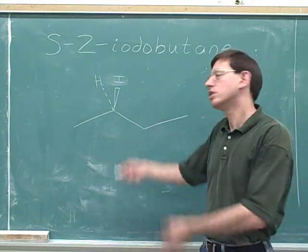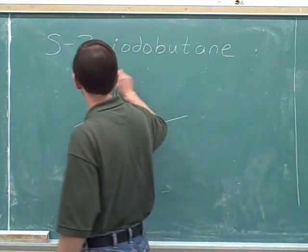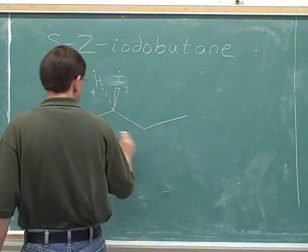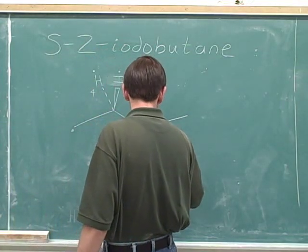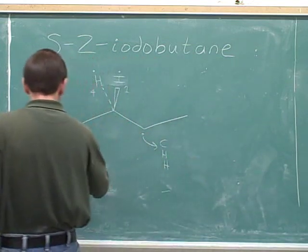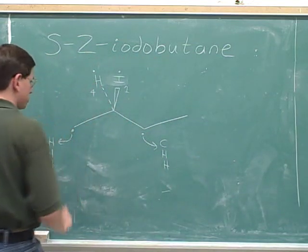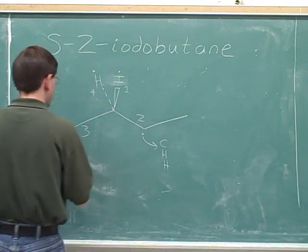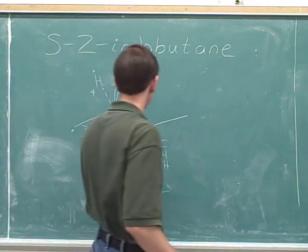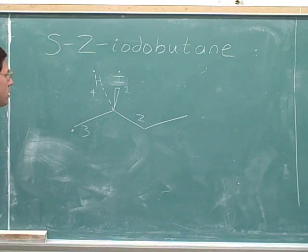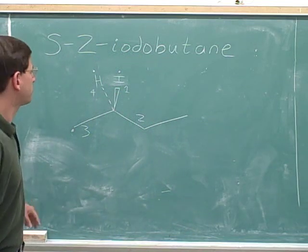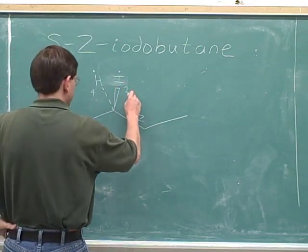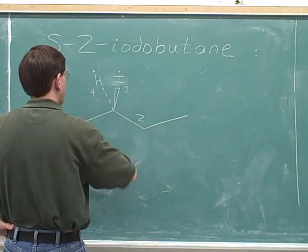If this is how we draw the stereocenter, what would be the configuration? Well, iodine will get the number one priority, and hydrogen will get the number four. These two carbons are tied: the carbon on the right is attached to a carbon and two hydrogens, while the carbon on the left is attached to three hydrogens. So the carbon on the right gets the higher priority — number two — and the left carbon gets number three. We purposely put the hydrogen on the dash to make our lives easier, so now we can see what the configuration of the stereocenter is. The configuration here is R — clockwise.